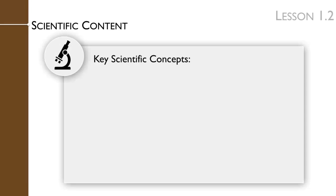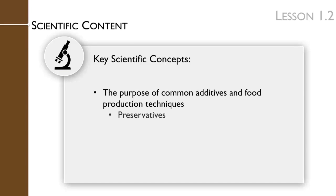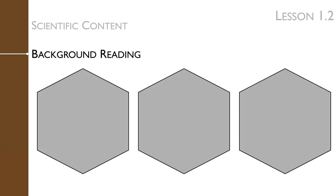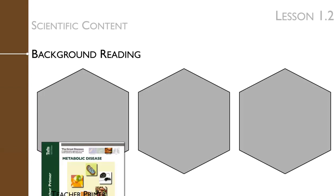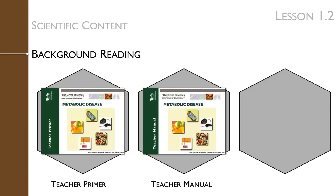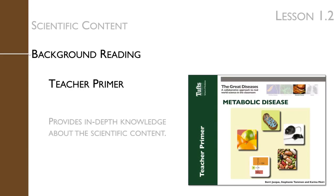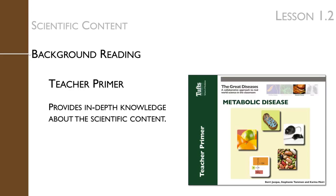To prepare for this lesson, you will need to review the key scientific concepts that will be presented throughout the lesson. They include the purpose of common additives and food production techniques such as preservatives, nutrients, hormones, antibiotics, and GMOs. You can review the scientific content in the background reading provided for you in the teacher primer, the teacher manual, and the student workbook.